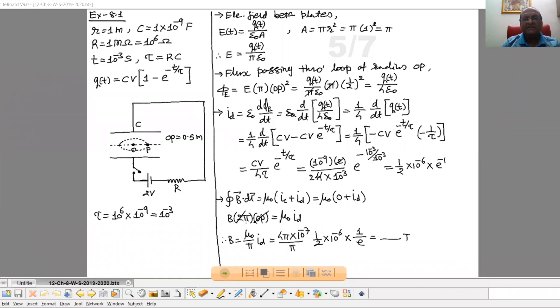So B, take this pi on right hand side. So mu 0 upon pi into ID. Now substitute all the values. Mu 0 is 4 pi 10 raise to minus 7. Pi half 10 raise to minus 6. And E raise to minus 1 is 1 upon E. Then substitute value of E and pi. You will get magnetic field at point P. Clear?